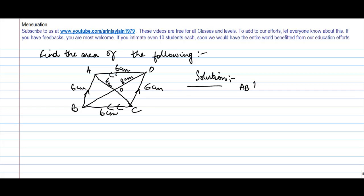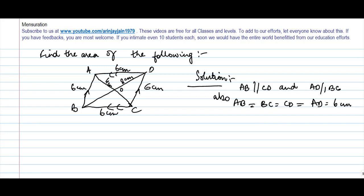We see from here that AB is parallel to CD and AD is parallel to BC. Also, AB is equal to BC is equal to CD is equal to AD is equal to 6 cm. Now in such a situation, what kind of a figure is this? This has to be a rhombus. Why? Because it is only in a rhombus that all four sides are equal and it's a parallelogram.